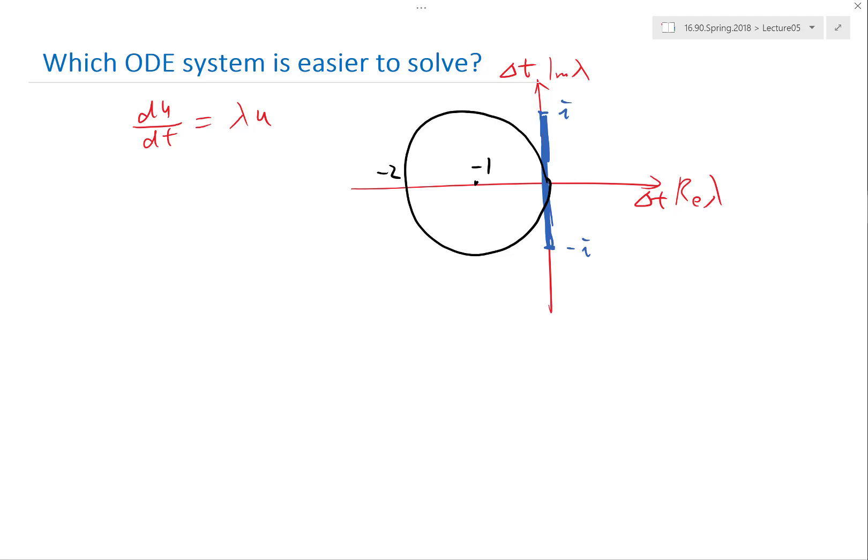That's something we'll talk about in the next lecture - what are the schemes that have a wider and more flexible stability region than these two. Now it becomes an exercise in how do I manipulate all the terms in the ODE solver to make it both accurate to a certain order and having stability regions encompassing a bigger region.